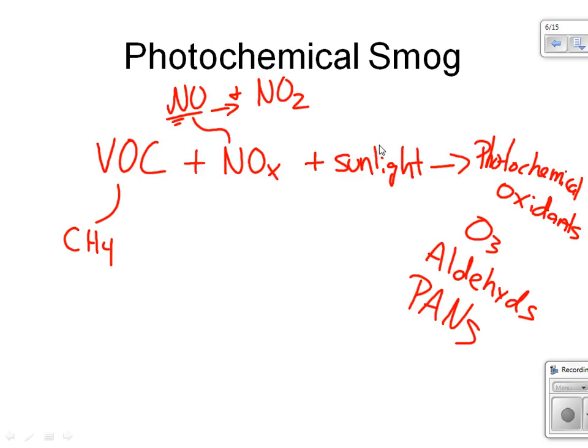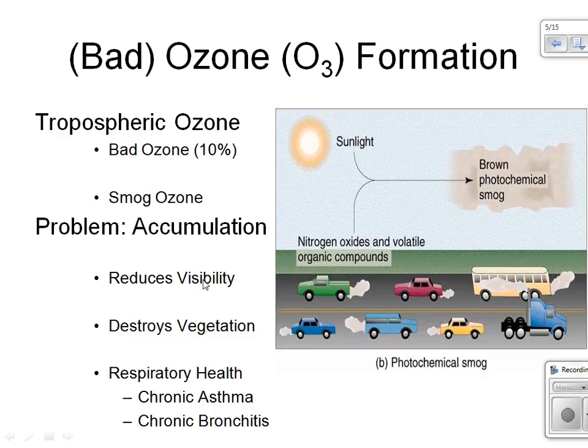And some of those consequences include a reduction in visibility. So those nitrogen oxides, which can then also react with water vapor to produce nitric acid, reduces visibility from this photochemical brown smog. Those photochemical oxidants also have a tendency to destroy vegetation. And then moreover, since they oxidize in our atmosphere, they also oxidize in our lungs and become very irritating. And oftentimes they exacerbate respiratory health issues. And they can lead to things like chronic asthma and chronic bronchitis, also exacerbating heart disease and so forth. So there's a lot of health and ecological consequences from this bad ozone.